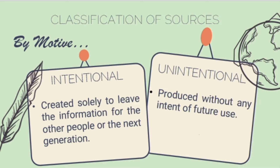Whether those accounts about Aguinaldo are true depends on the historians and the sources one consults. As students, you are given the freedom to investigate whether the information shared with you is reliable or not — you have to verify that on your own. On the other hand, an example of an unintentional source is the Manunggul Jar, from which historians can generate information about the past, even though the true purpose of that jar was not to share information.